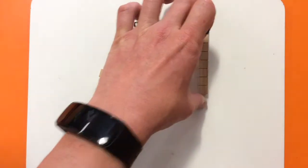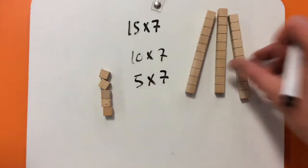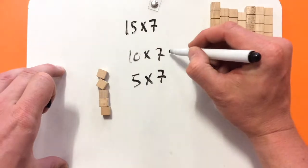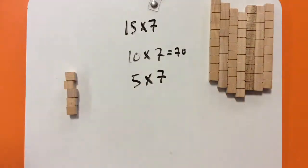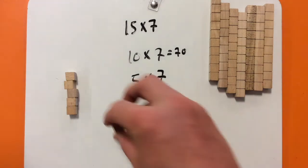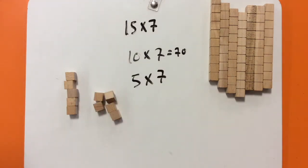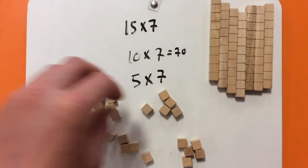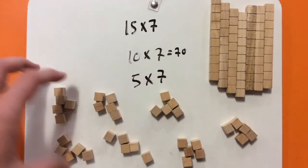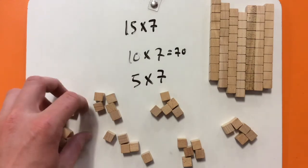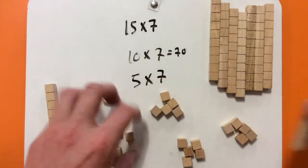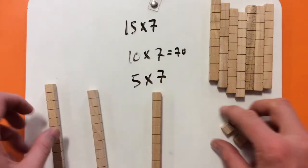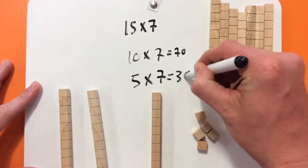So let's try 10 times 7 first. I've got my 1, 2, 3, 4, 5, 6, 7. So I know that 10 times 7 is 70. And then I'm going to do my 5 times 7. So there's 1, 2, 3, 4, 5, 6, 7. Now I know that if I've got two 5s, 5 and 5 is 10, so I'm going to swap those two 5s for a 10, and swap these two 5s for a 10. So I know 5 times 7 is 35.